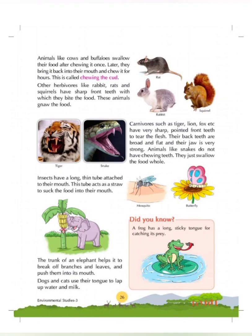You must have seen rats, rabbits and squirrels — they keep on nibbling the food with the help of their sharp front teeth. This biting or chewing of food with the teeth is called gnaw.